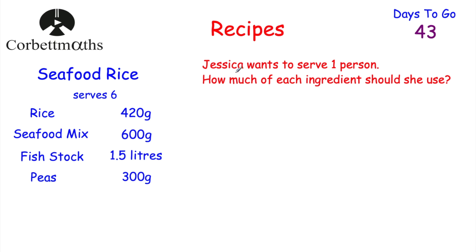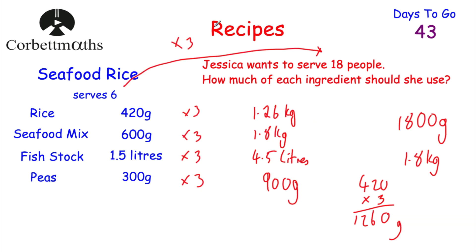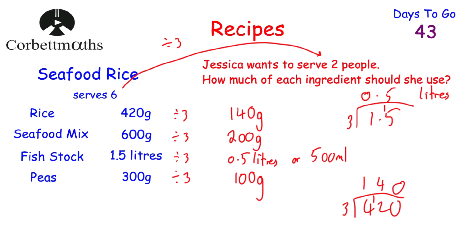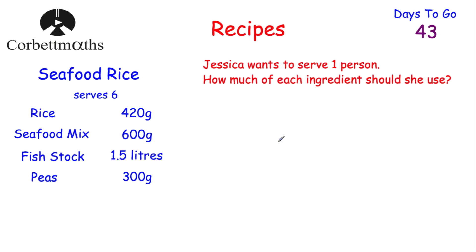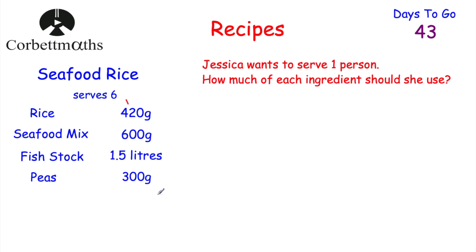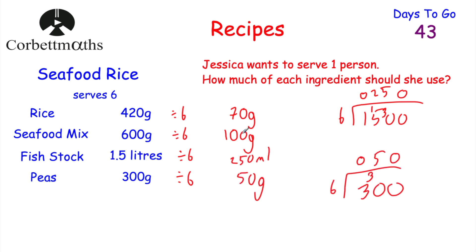Next question: Jessica wants to serve one person. This is quite useful because finding the amount for one person means we can then multiply by any number of people we want — like five, seven, or 19. Since the recipe serves six, we divide each ingredient by six: 70g of rice, 100g of seafood mix, 250ml of fish stock, and 50g of peas. That's how much you need for one person.